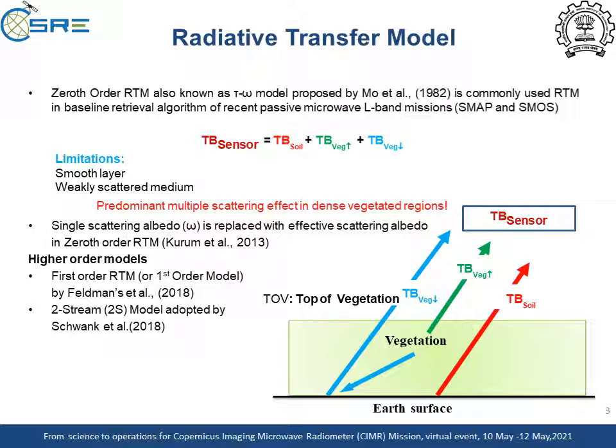Recently, higher-order models have been developed to accommodate for multiple scattering, namely Feldman's first-order model and the 2A submission model, which are adapted to retrieve soil moisture and VOD in dense vegetative pixels. However, the relative contributions of these RTMs and their model parameterizations in studying the error in soil moisture and VOD retrievals are left unexplored.